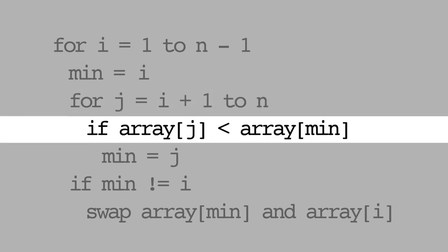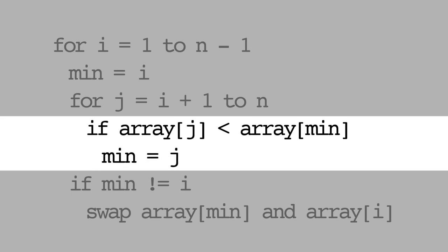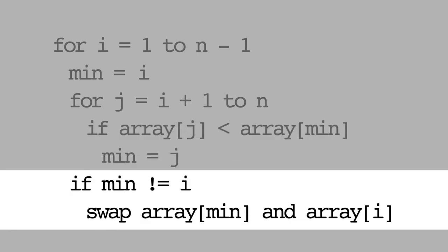On line 4, we compare the current element to the minimum element that we've seen so far. If the current element is smaller than the minimum element, then we remember the current element as the new minimum on line 5. Finally, on lines 6 and 7, we swap the minimum element with the first unsorted element, thereby adding it to the sorted portion of the list.